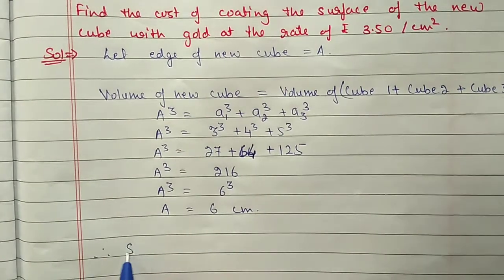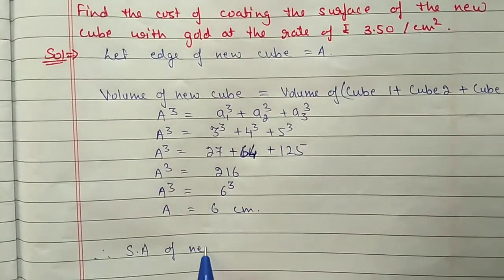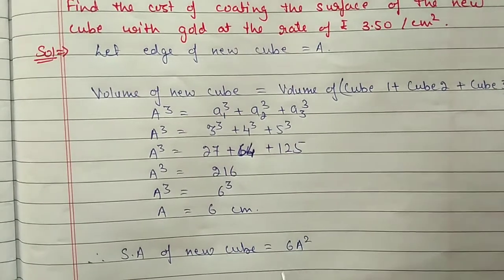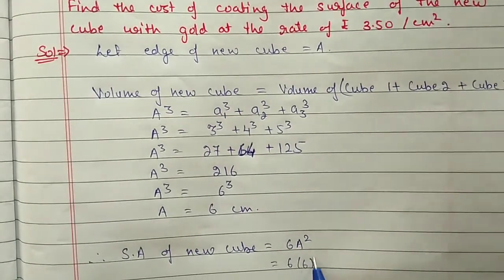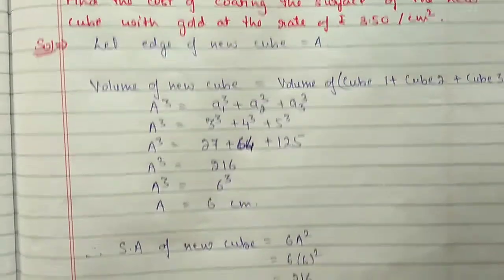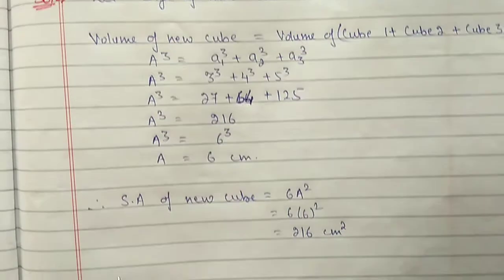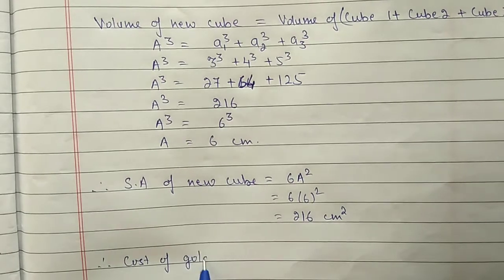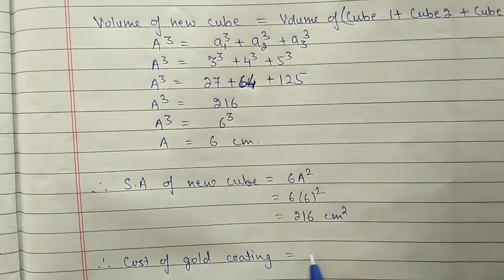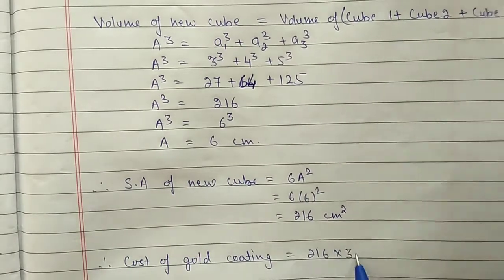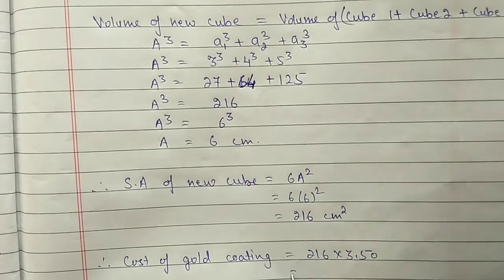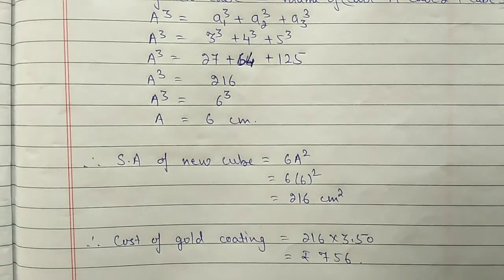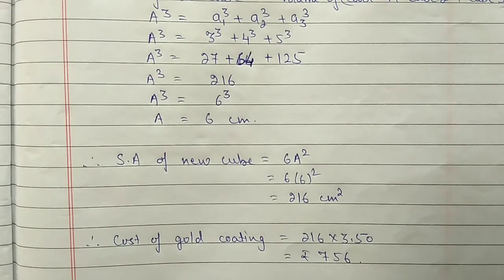Surface area of the new cube = 6a² = 6 into 6² = 6 into 36 = 216 cm². Therefore the cost of gold coating = 216 into 3.50 = 756 rupees. In this video we will do till here; remaining questions we will continue in the next video. Thank you for watching.